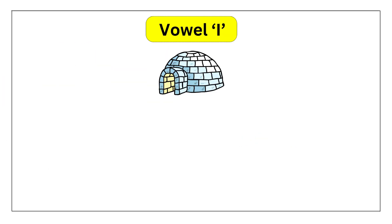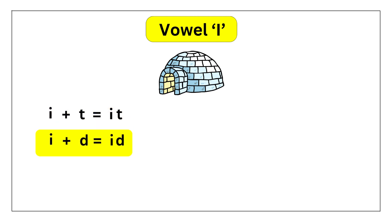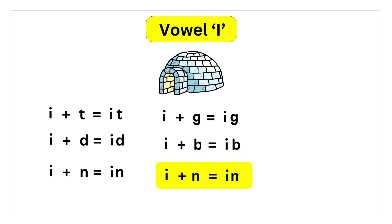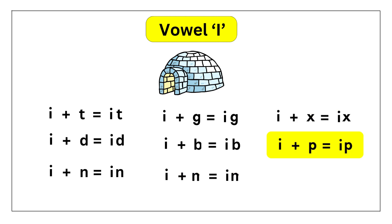Let us move on to Vowel I. I-T: IT. I-D: ID. I-N: IN. I-G: IG. I-B: IB. I-M: IM. I-X: IX. I-P: IP.